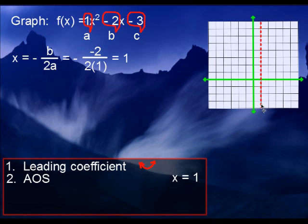I'm going to graph the line x equals 1. x equals 1 simply means that it crosses the x-axis at 1. This is a dotted line, meaning it's not really there, but we draw it in there anyway to help us do the graph.